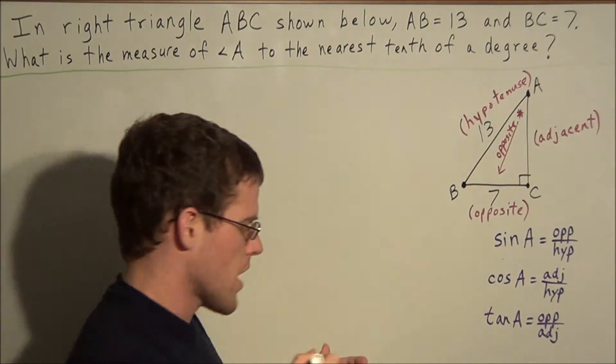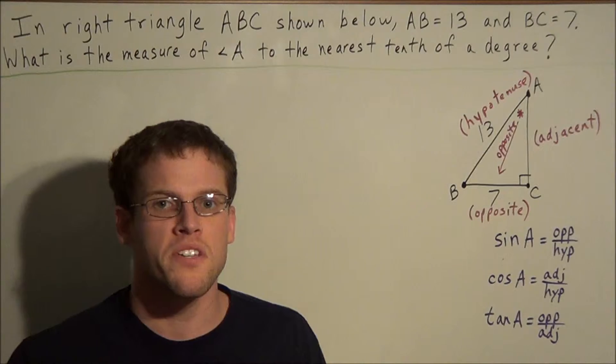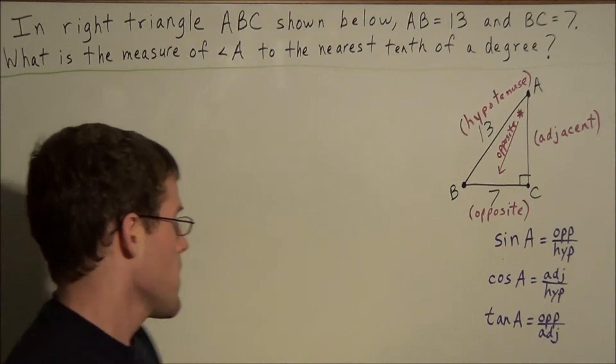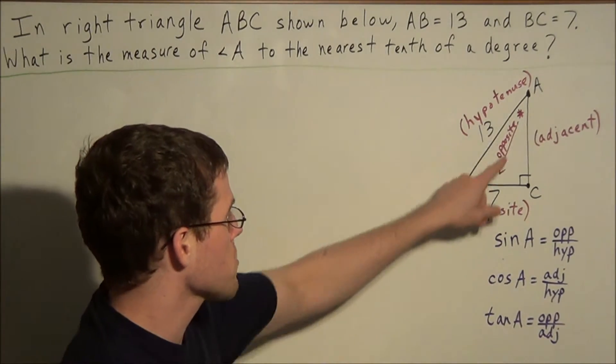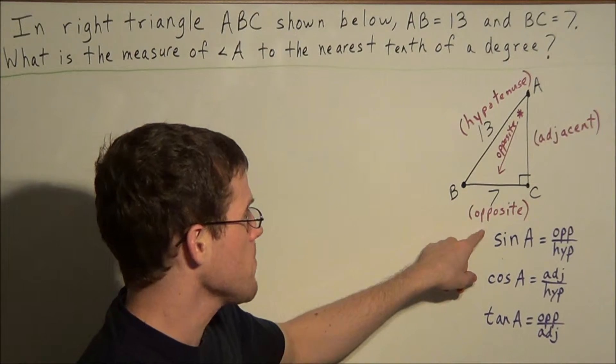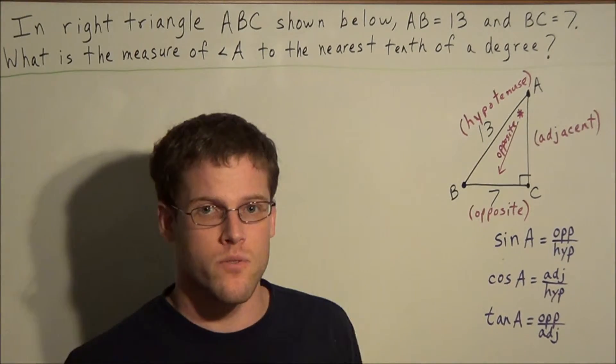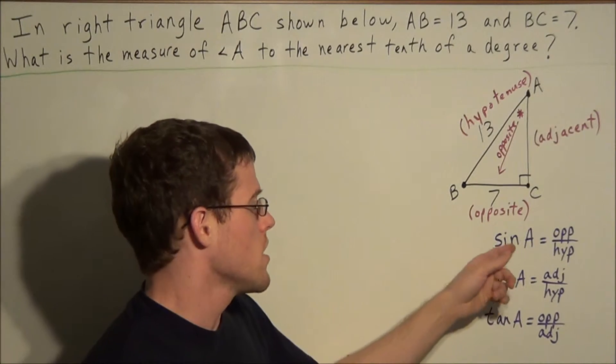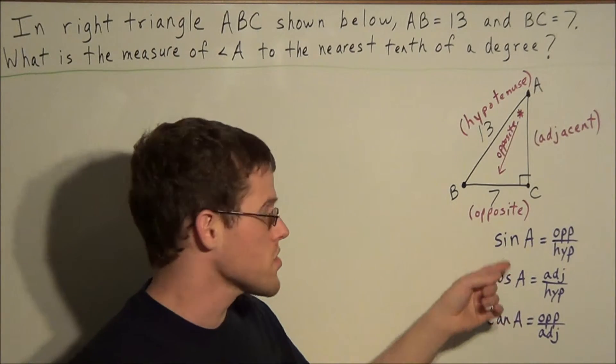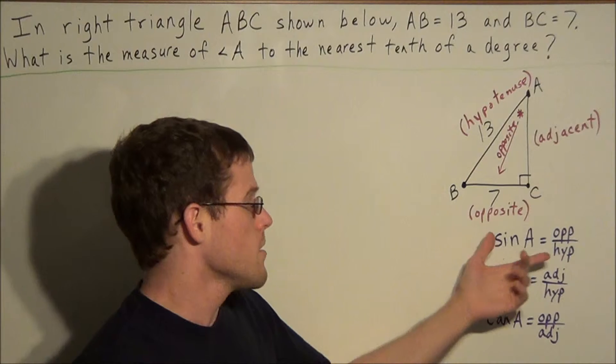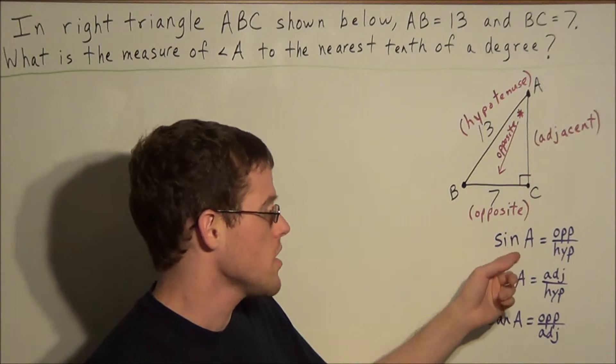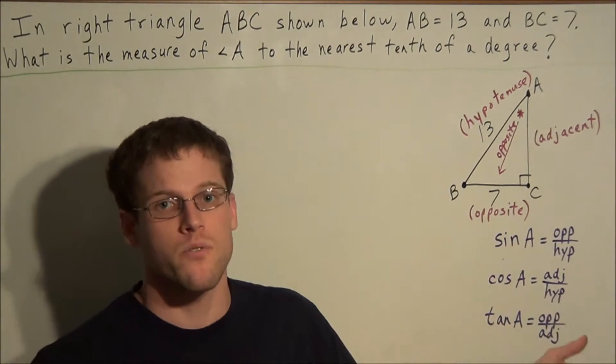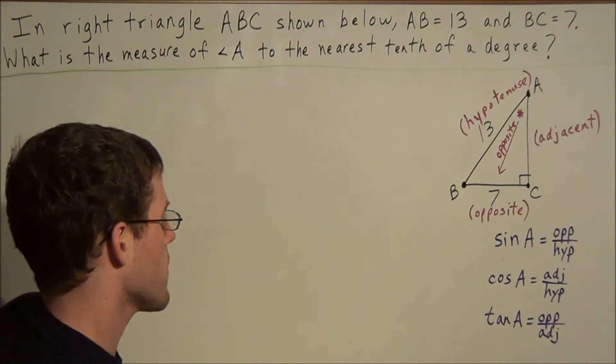So now that we've labeled this diagram, we want to think about what two pieces of information do we know. And if we look at the diagram, we know the side opposite of angle A, and we know the length of the hypotenuse of this right triangle. So when we hear the word opposite and hypotenuse, the word sine or the function sine should go off in our head, because that one makes use of the opposite side and the hypotenuse of whichever right triangle you're talking about.